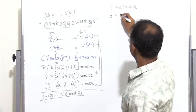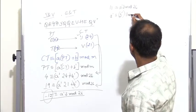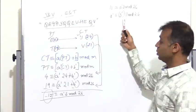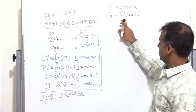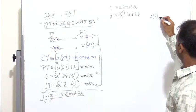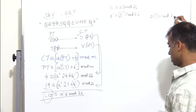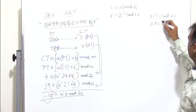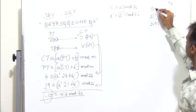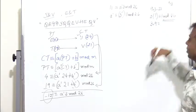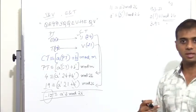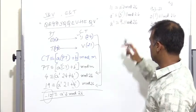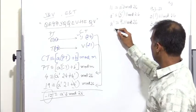So a' is congruent to 3 inverse into 11 mod 26. We do not write 11/3 but instead find the modular inverse of 3. We need a number which when multiplied by 3 gives remainder 1 mod 26. By inspection, 9 × 3 = 27, and 27 mod 26 = 1, so the inverse of 3 is 9. Therefore a' = 9 × 11 mod 26 = 99 mod 26 = 21.